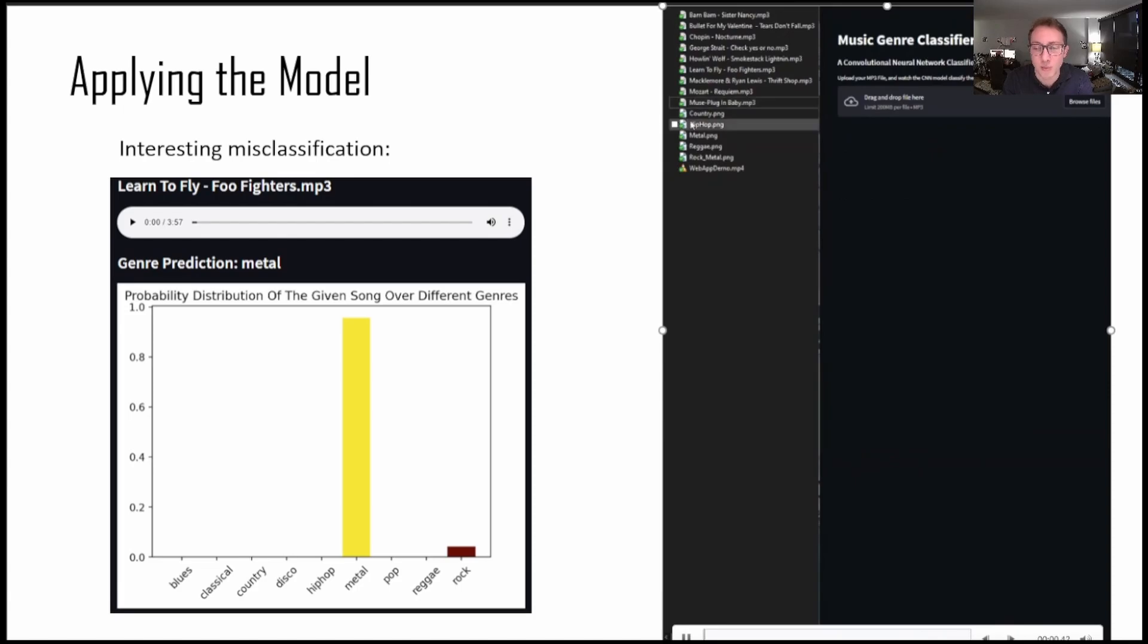So the video on the right is a demonstration of me using the web application, and the image on the left is an example of a classification that is wrong by popular opinion. The song here is Learn to Fly by the Foo Fighters, which the model classified as metal, but I and many others would classify it as rock. And for those who are not familiar, the Foo Fighters is a rock band, but their lead singer generally has a loud style of singing, which is a common theme found in metal music. So I don't find this misclassification to be surprising, but I do think that customers using a music service like this would have an issue with such a mistake.